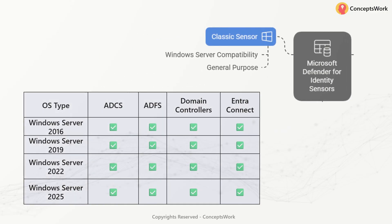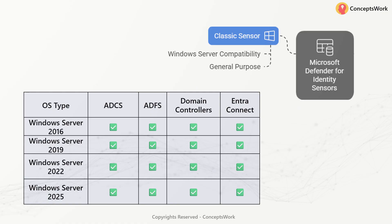The classic sensor can be installed on ADCS, ADFS, domain controllers, AAD Connect, and any version of Windows Server 2016 or above. You download a dedicated setup file from security.microsoft.com, and depending on the server type, the respective option is selected by default. The classic sensor is the original option that has been there in the past, whereas the built-in sensor was released more recently. For the majority of scenarios, you will need the classic sensor.